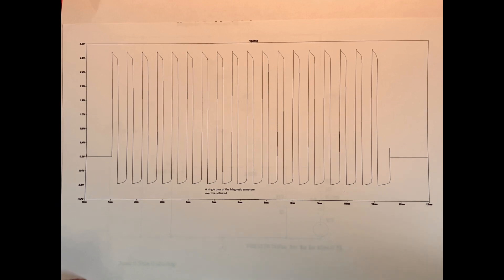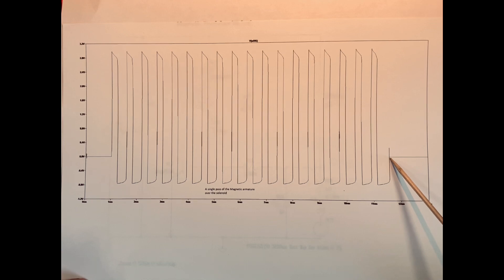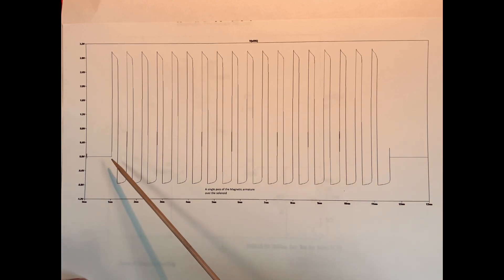This graph shows the output from the LT Spice simulation. This is a single pass of the armature over a period of approximately 11 milliseconds across the coil. As you can see here we have a series of oscillations which occurs as the armature passes over the coil. This is the interesting part of the circuit operation.